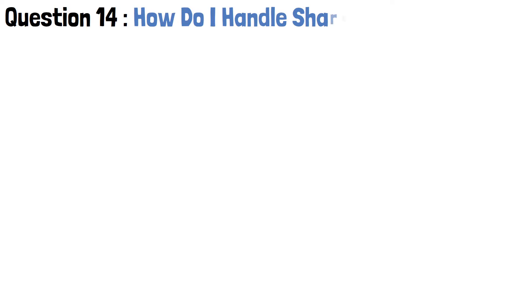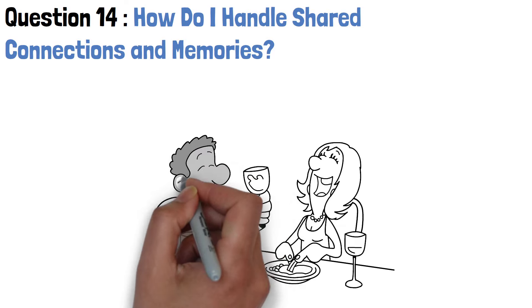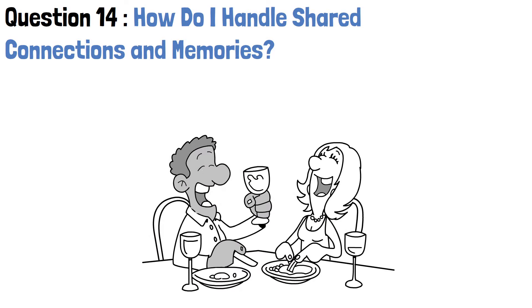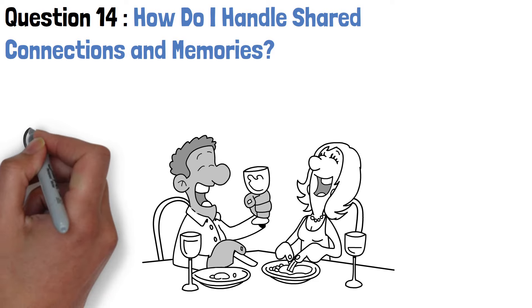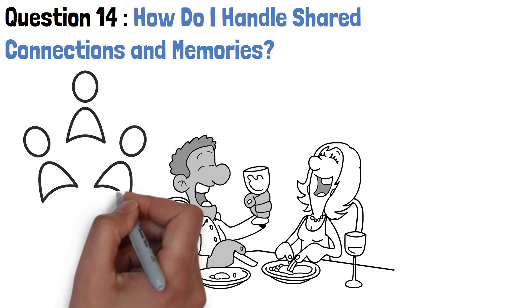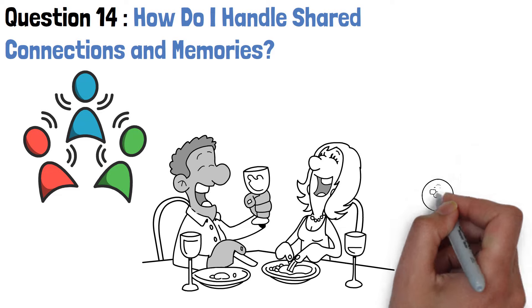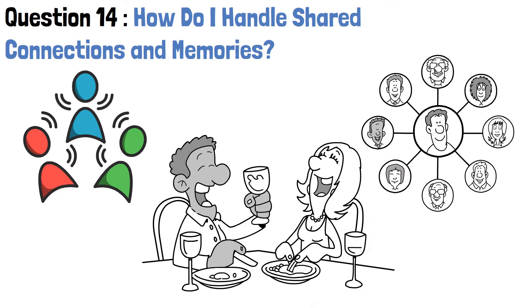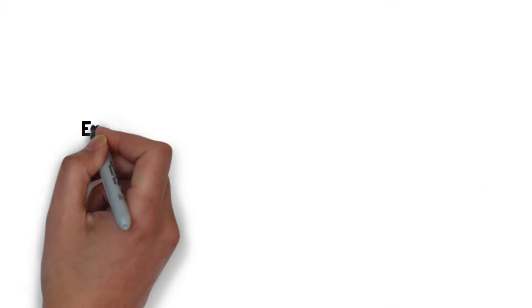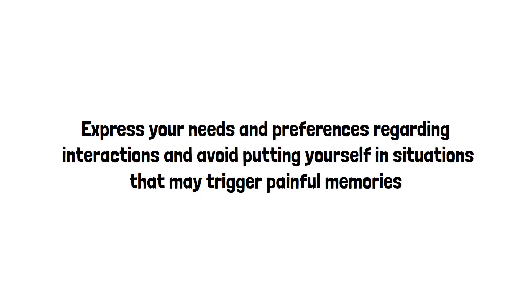Question 14. How do I handle shared connections and memories? Shared connections and memories are intertwined with the fabric of a relationship, and navigating them after a breakup can be a delicate balancing act. Shared connections, whether they're mutual friends, social circles, or shared spaces, can evoke a range of emotions after a breakup. It's essential to approach these connections with sensitivity and grace. Start by setting boundaries and establishing clear communication with shared connections. Express your needs and preferences regarding interactions and avoid putting yourself in situations that may trigger painful memories.